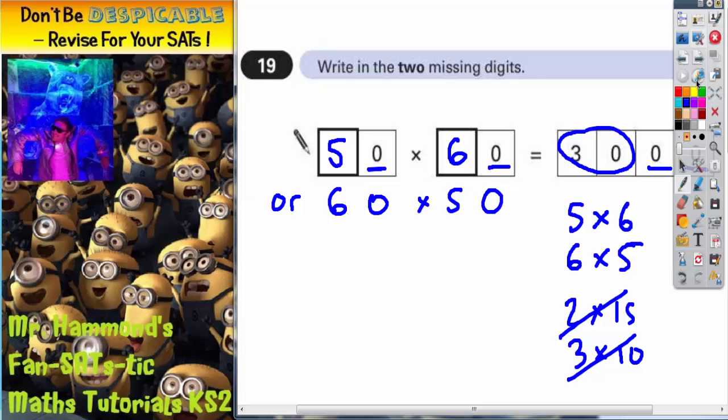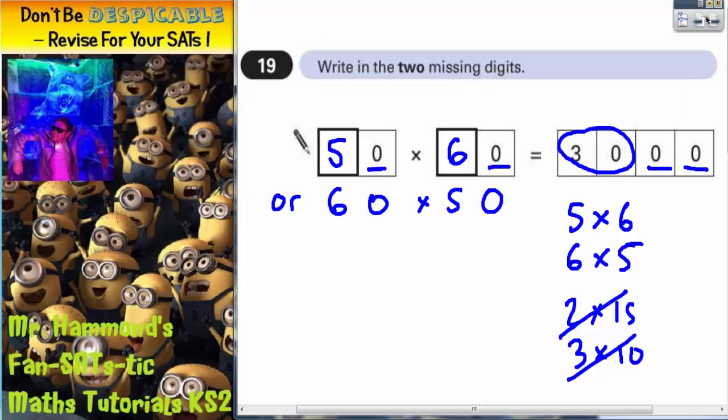Let's just double check that we do indeed get 3,000. 5 times 6 is 30 and we've got the two zeros on the end which is here and here. Therefore 50 times 60 is 3,000 and it works the same the other way around.